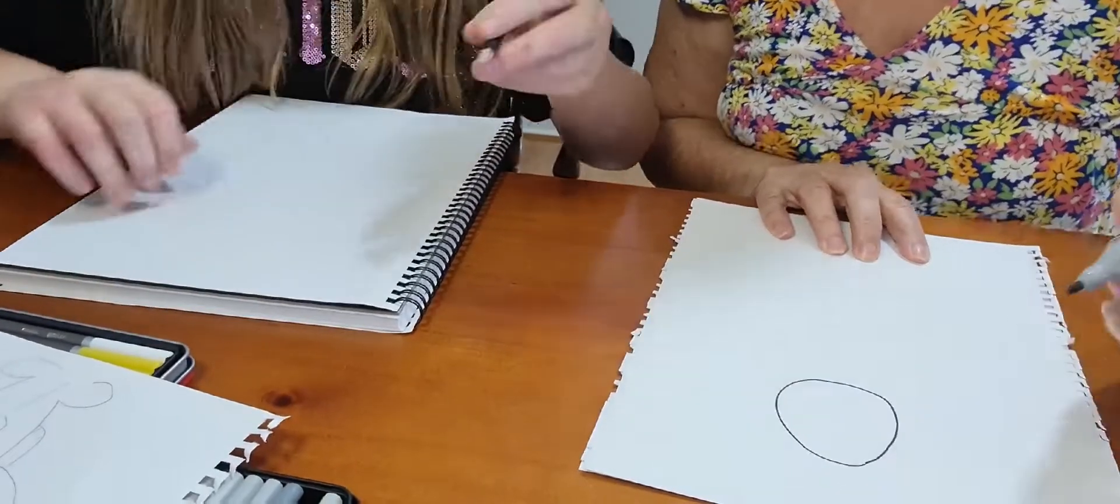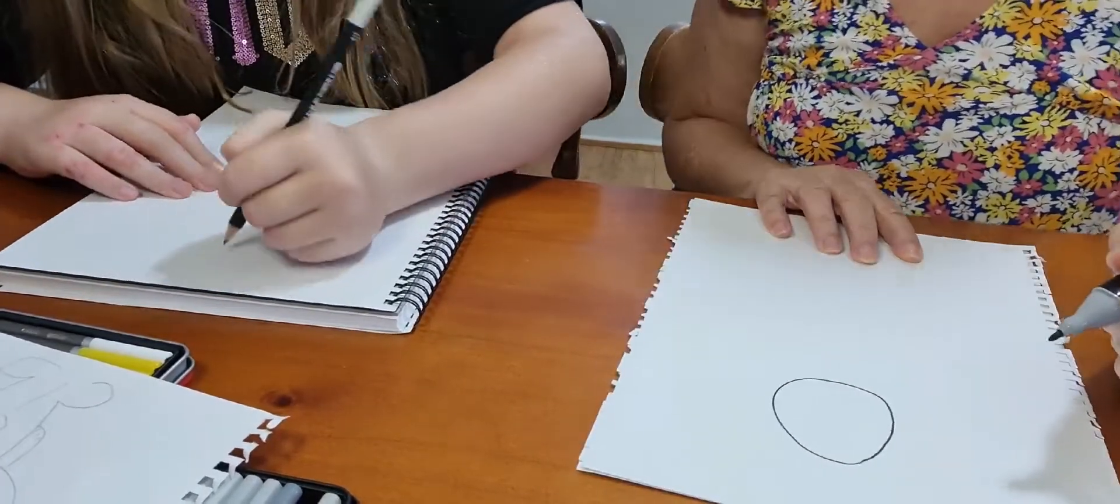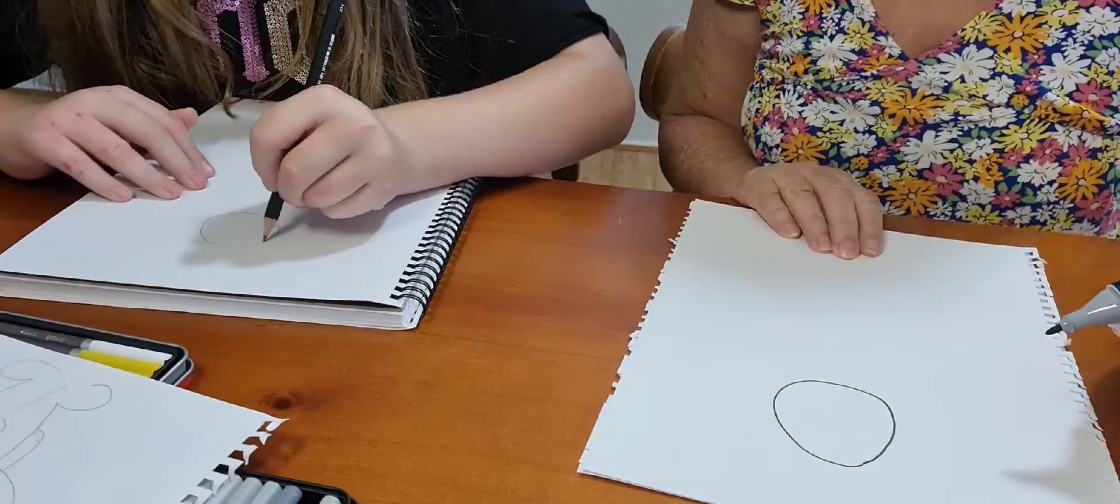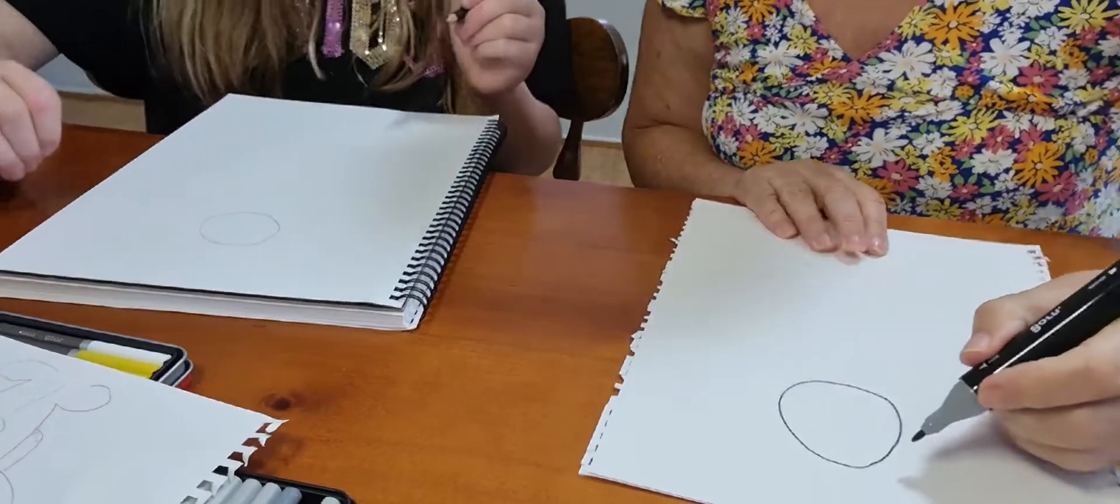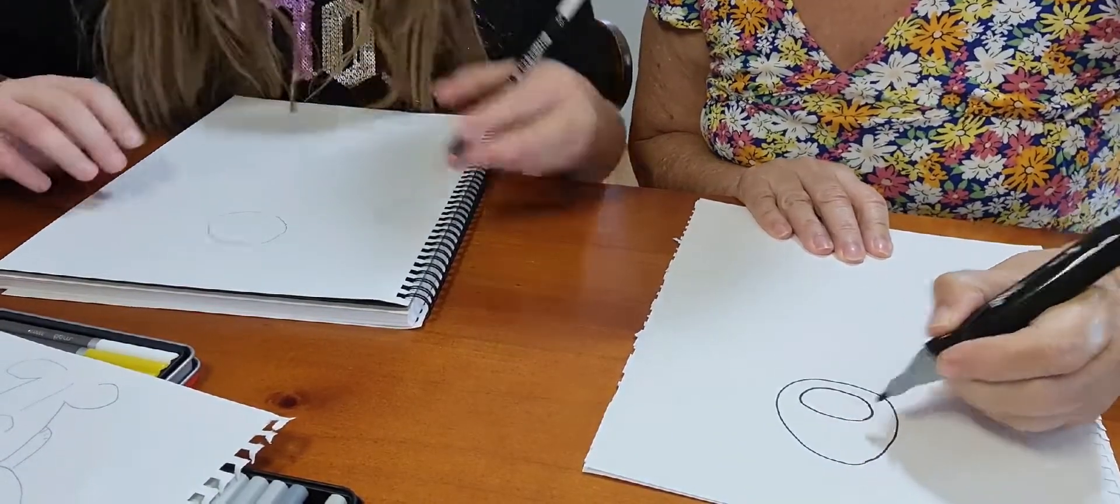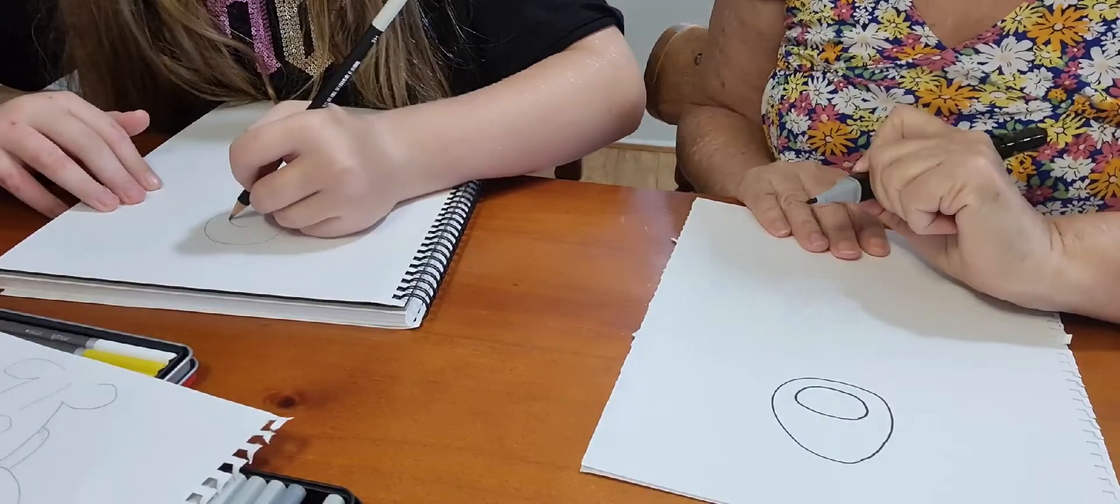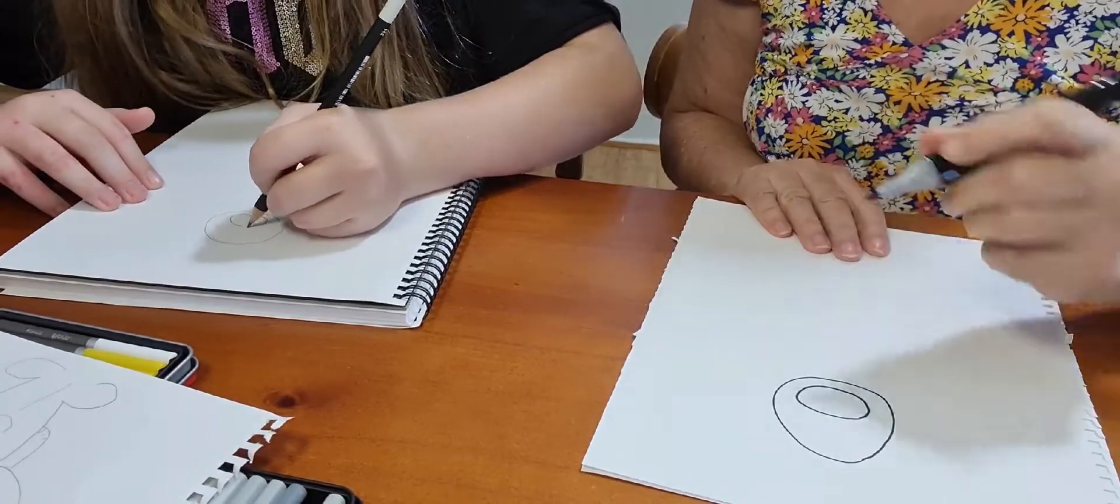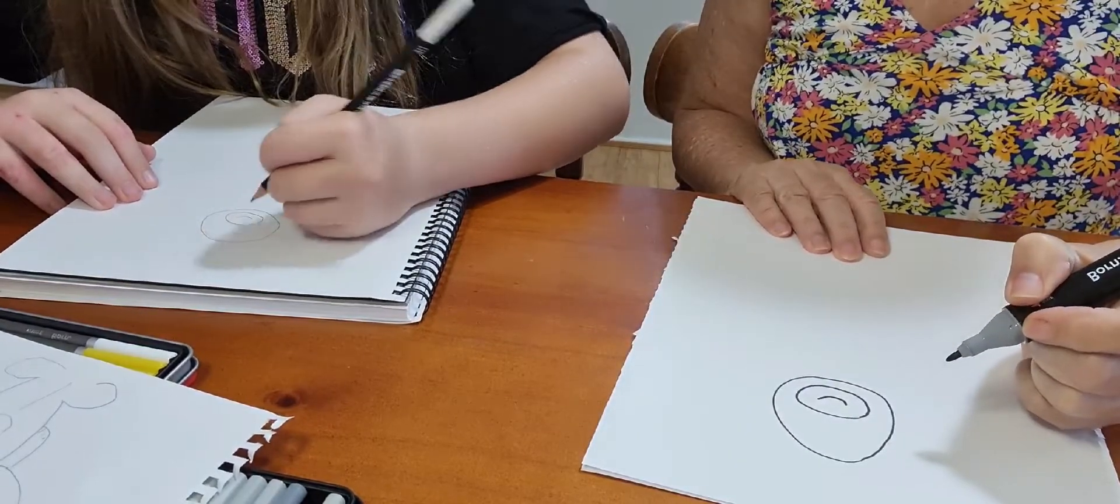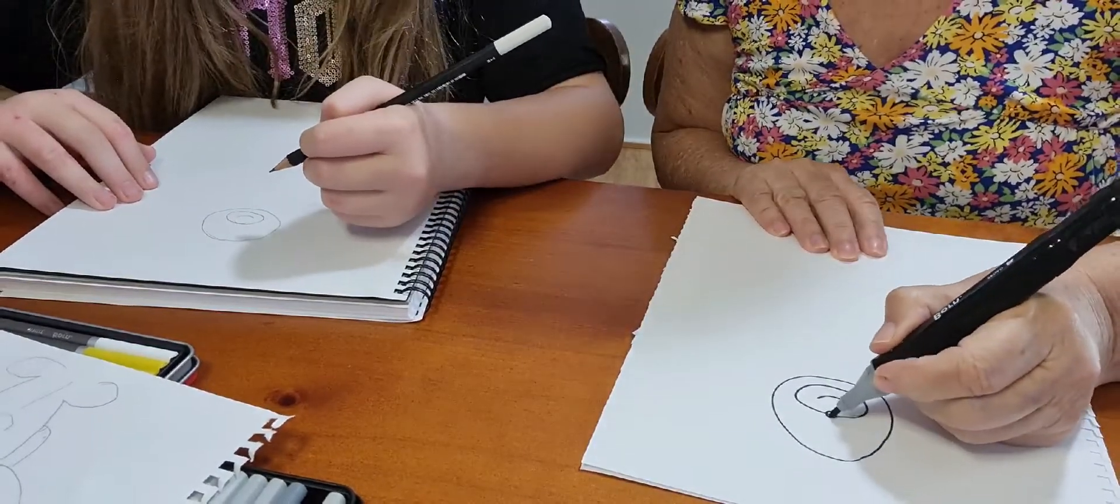And let's do this for around its mouth. Then we do a mouth. Then we'll do a little black button for a nose.